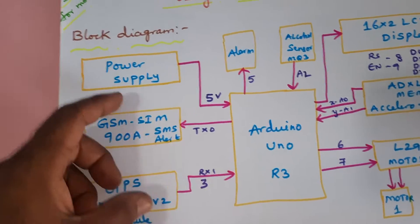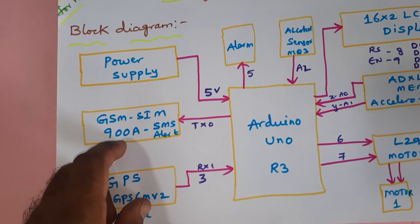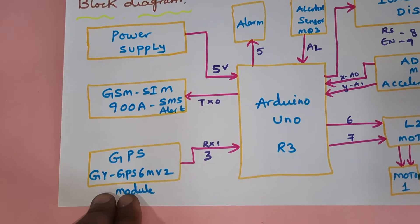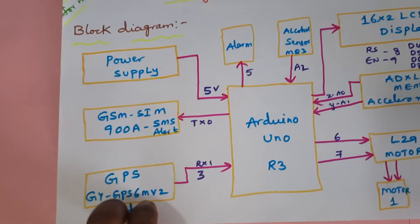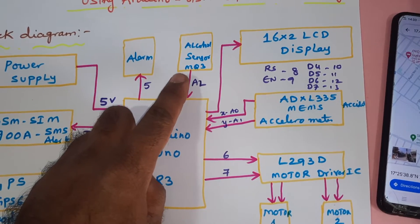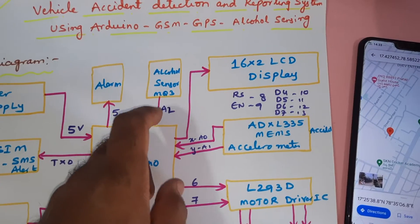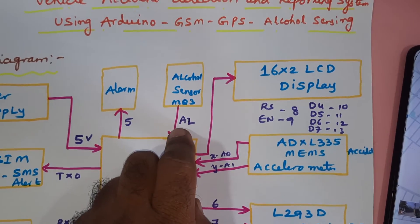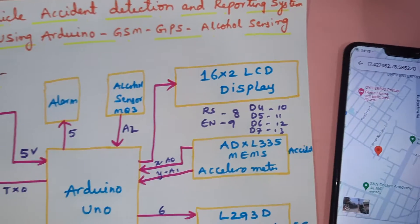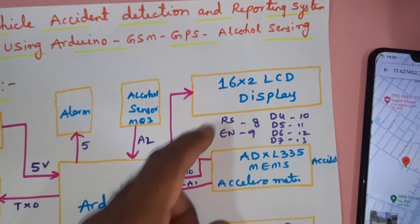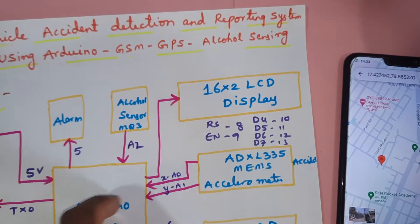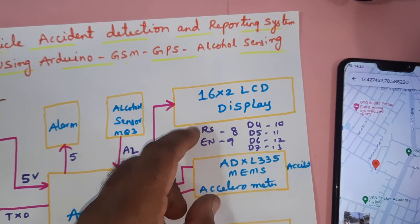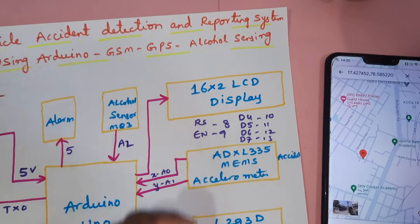We are using an Arduino UNO R3 with a 5-volt power supply module, GSM SIM900A for SMS alerts with Google Map location, and a GPS GY-GPS6MV2 module that gets the exact latitude and longitude from satellites. An alarm triggers on any accident or alcohol detection. The MQ3 alcohol sensor and a 16x2 LCD display are connected via RS, EN, D4, D5, D6, D7 on pins 8, 9, 10, 11, 12, 13.